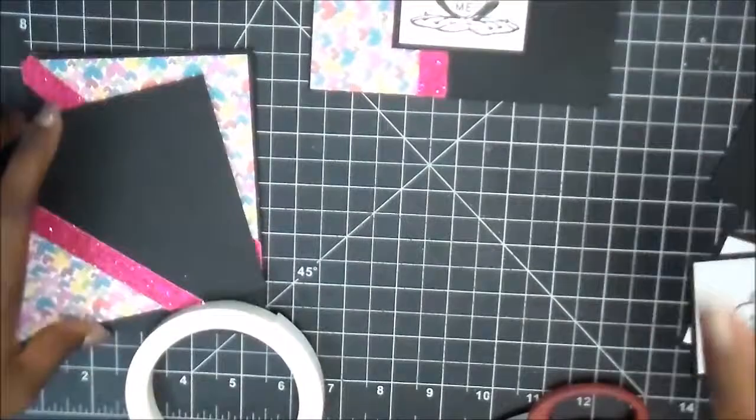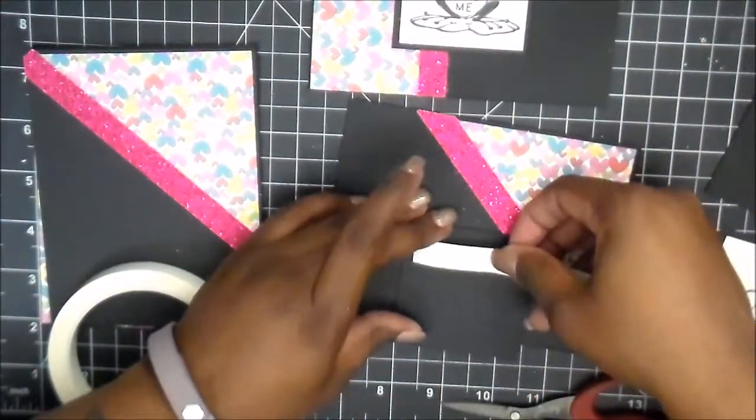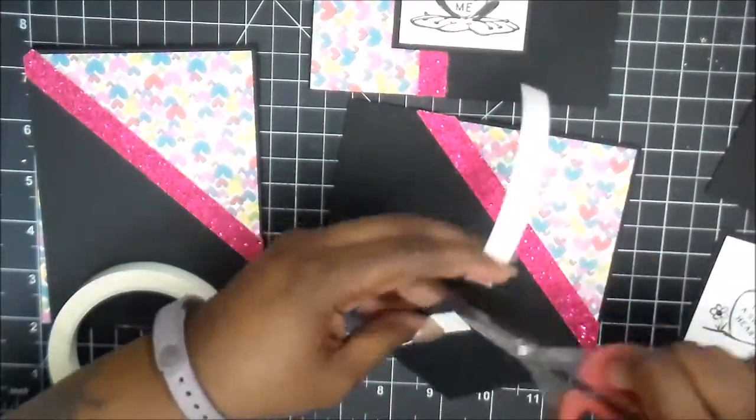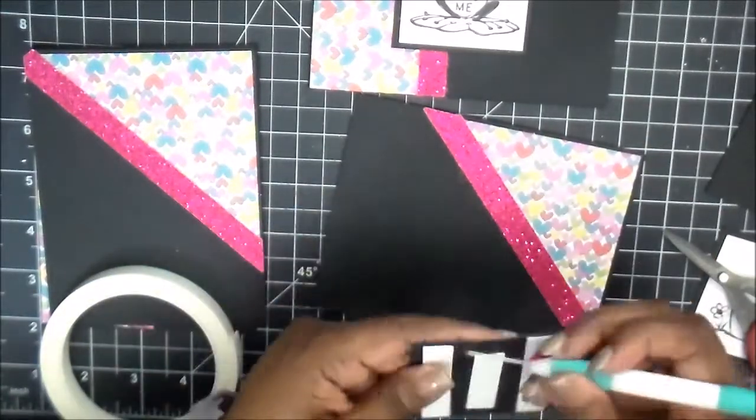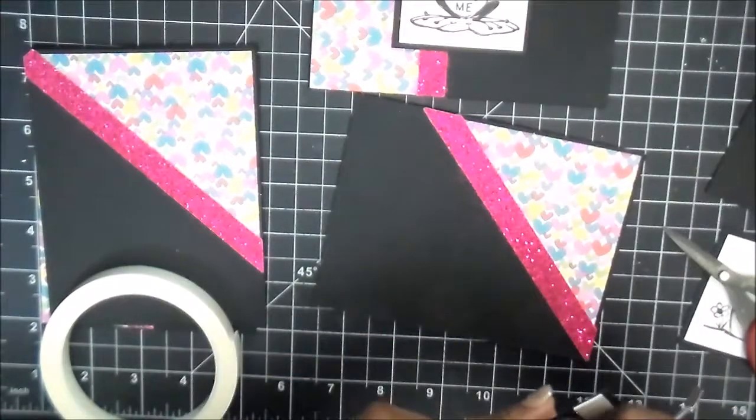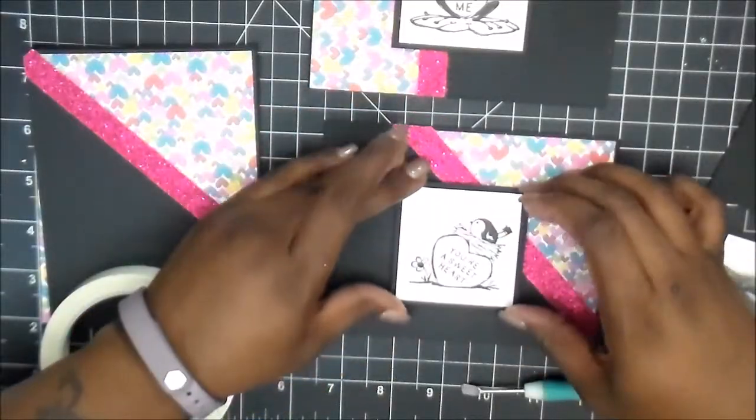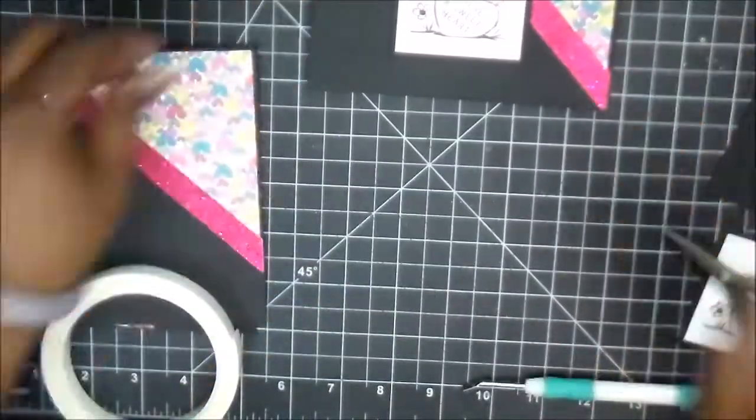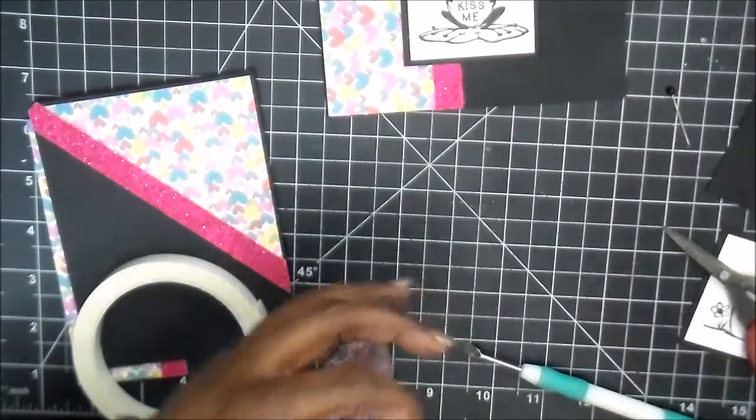And then, like I said, I'm using some foam tape to attach these to the front. And the foam tape really works best, especially with using the glitter paper. It'll attach better to the front. And I'm just using my everything tool, the little pointy end, to take the backing off of the foam tape.